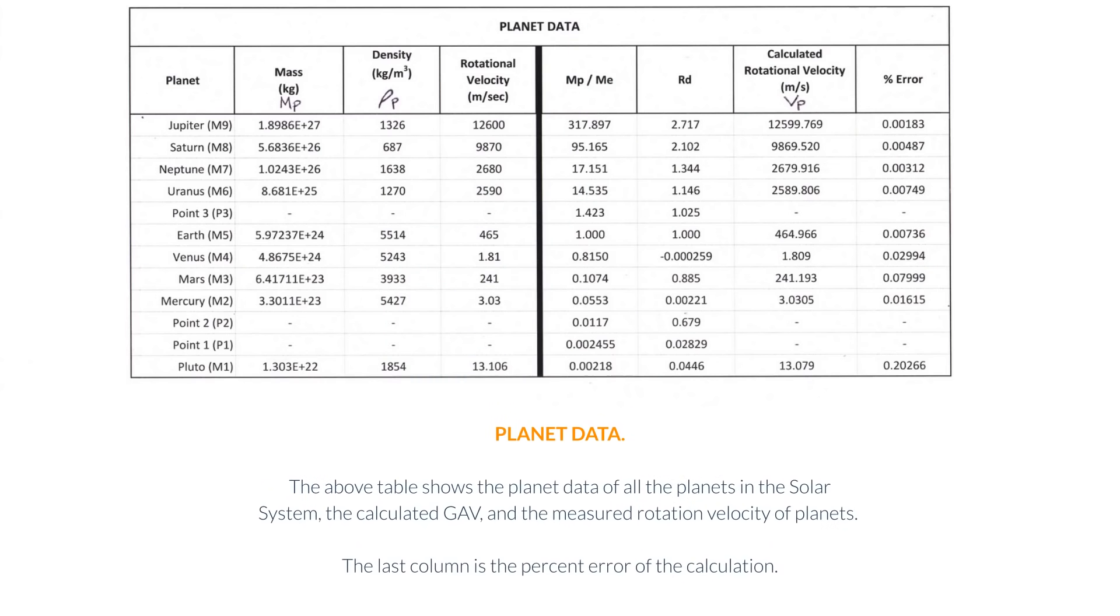Planet Data. The above table shows the planet data of all the planets in the solar system, the calculated GAV, and the measured rotation velocity of planets. The last column is the percent error of the calculation.